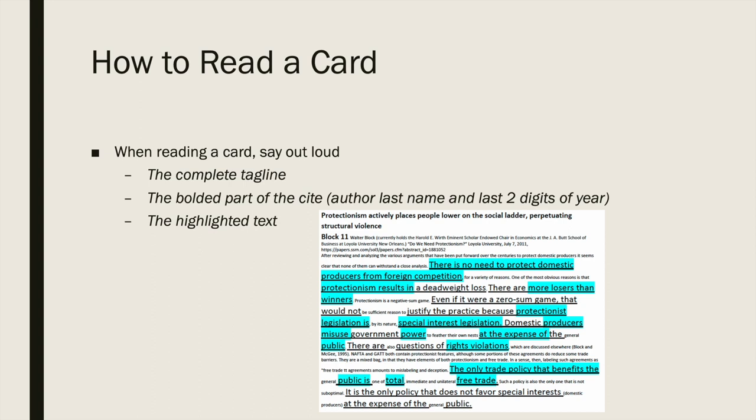So how do you read this card out loud in round? When you are reading a piece of evidence in debate, you read the complete tagline, the bolded part of the cite, and the highlighted text. For instance, this card would be read as follows: 'Protectionism actively places people lower on the social ladder, perpetuating structural violence. Block 11. There is no need to protect domestic producers from foreign competition. Protectionism results in more losers than winners. Protectionist legislation is special interest legislation. Producers misuse power at the expense of the public. Rights violations. The only trade policy that benefits the public is total free trade.'